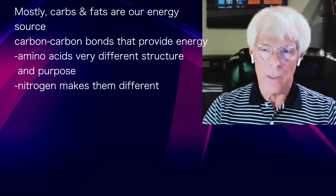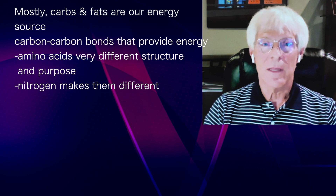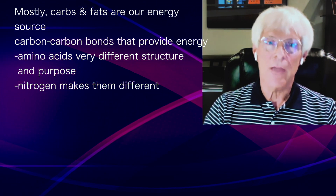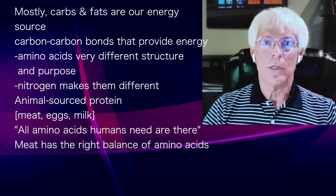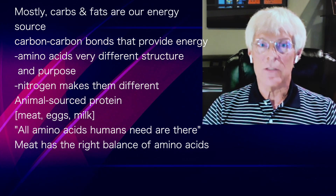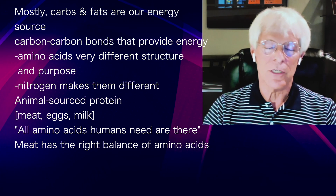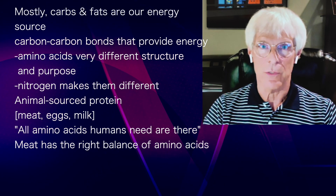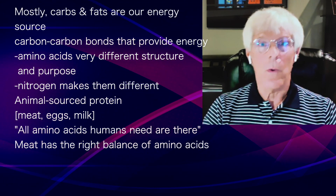Essential fatty acids, carbs, and fats are basically energy sources — they're carbon-carbon bonds that provide energy — whereas amino acids have a very different purpose and structure, and the nitrogen component is part of what makes them different. If you're looking at animal source proteins, whether meat, eggs, or milk, basically all of the amino acids a human would need are present, because we share the same proteins. Meat is a good example because they're all in pretty much the right balances.